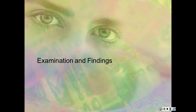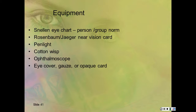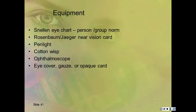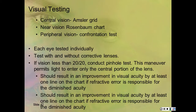For the examination, you'll need a Snellen chart—reading it as 20/20 or 20/30, where the number is the person being examined over a group norm. If someone reads 20/40, they can see at 20 feet what the group can see at 40 feet. The Rosenbaum is the near vision card. You also need a pin light, cotton whisk, ophthalmoscope, and a cover for confrontation testing. Test central, near, and peripheral vision; test each individual eye with and without corrective lenses.